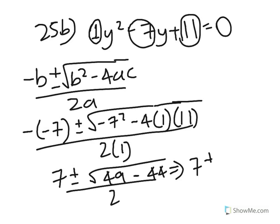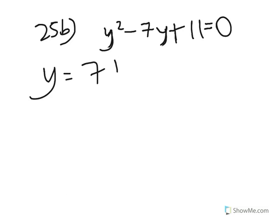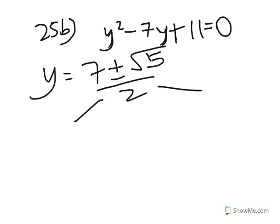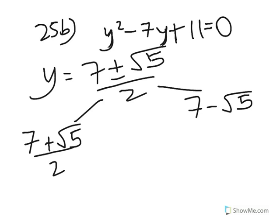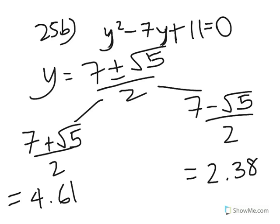This further simplifies to 7 plus or minus root 5 over 2. Splitting into the two possibilities: x equals 7 plus root 5 over 2, giving 4.6180, which is 4.61 to three significant figures; or x equals 7 minus root 5 over 2, giving 2.3819, which is 2.38 to three significant figures.